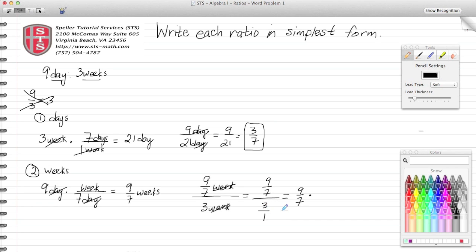Now I multiply across my numerators to get 9, and across my denominators—seven times three is 21. Here I see 9 divided by 3 is 3, and 21 divided by 3 is 7.